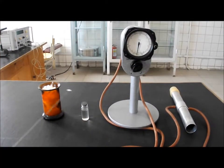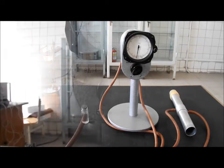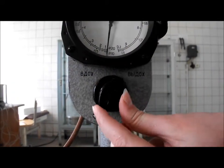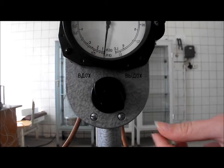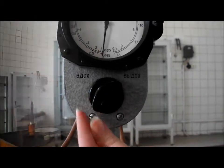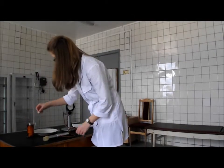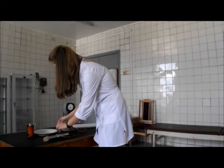For the work you need cotton wool, alcohol, and a pneumotachometer. The tachometer has two positions: inhalation and exhalation. Moisten the mouthpiece of the pneumotachometer with cotton wool and alcohol.